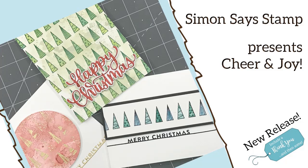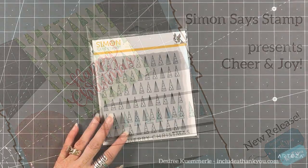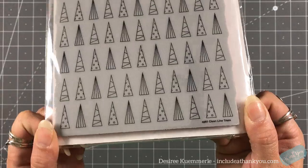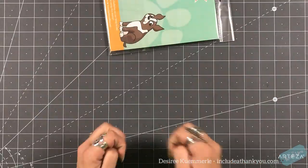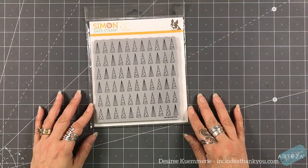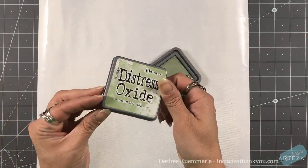Hey everyone, it's Desiree and I am here with Simon Says Stamp, helping celebrate their new release called Cheer and Joy. You want to make sure you check this one out. There are some beautiful items within this collection as always. For today's projects, I'm going to be playing with a background stamp called Clean Line Trees. While this is a bunch of triangles, there is a lot that we can do with it. I'm going to show you three different ways to create cards using this background stamp.